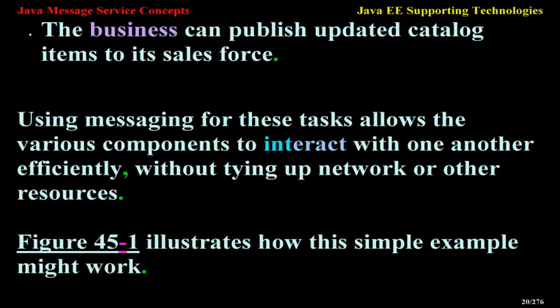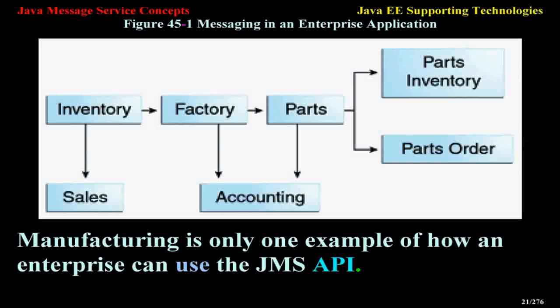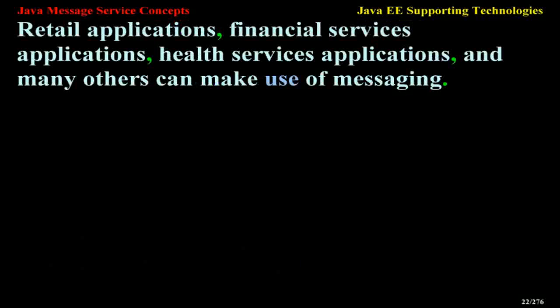Figure 45-1 illustrates how this simple example might work. Manufacturing is only one example of how an enterprise can use the JMS API. Retail applications, financial services applications, health services applications, and many others can make use of messaging.